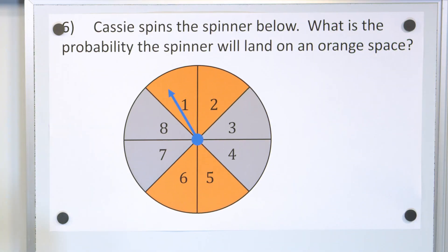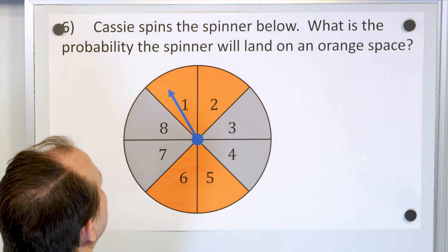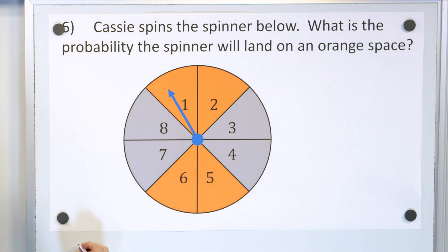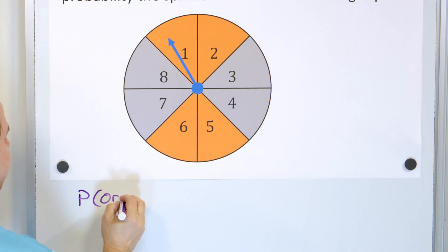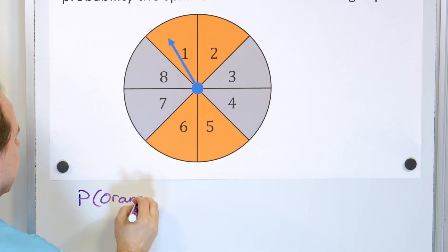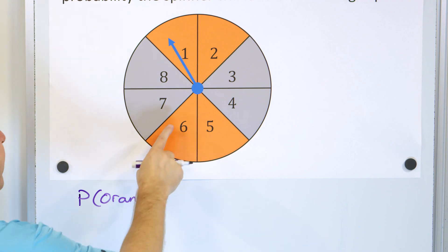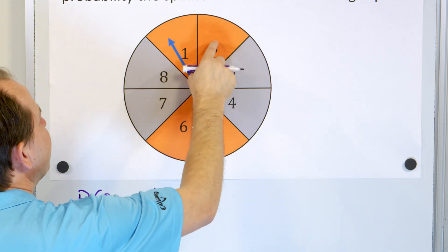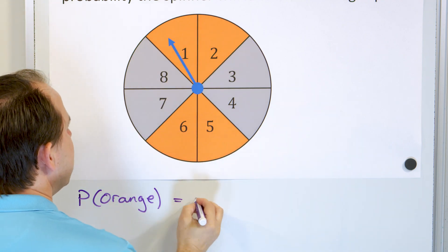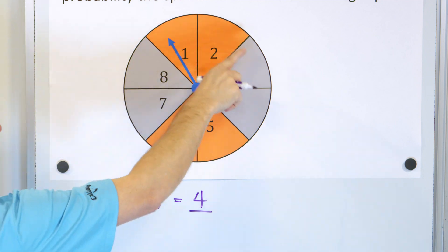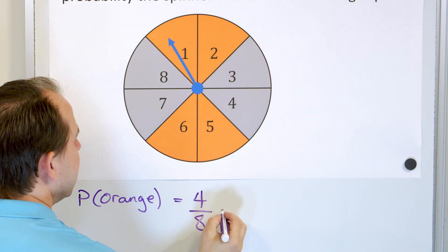Our next problem: Cassie spins the spinner below. What is the probability the spinner will land on an orange space? We have four orange positions out of a total of eight possible positions.